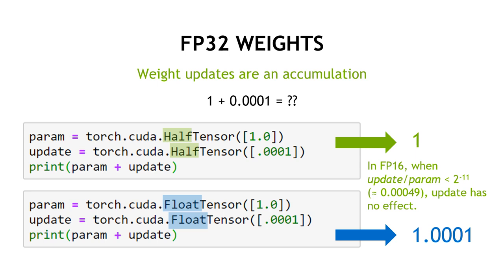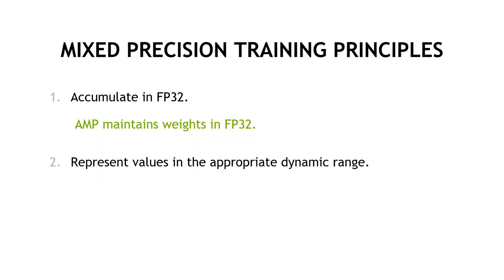You might ask: why not do everything in FP16? Well, as we showed, there are certain operations that benefit from FP32, and leaving them in FP32 can improve accuracy and stability in end-to-end training. One of these is the weight updates. Reiterating that example: if we update a value of 1 in FP16 with 0.001, we just get 1. But in FP32, we get the right answer. Because weight updates are an accumulation, AMP maintains those weights in FP32.